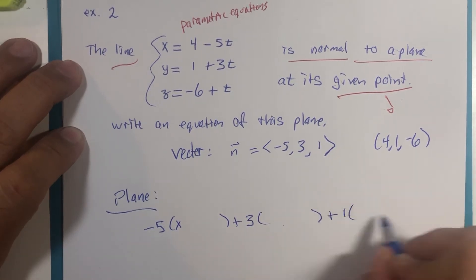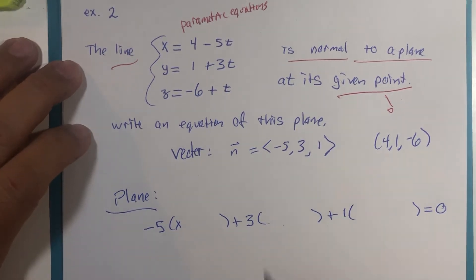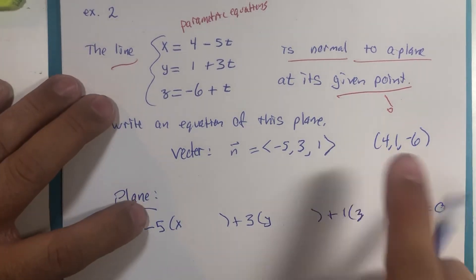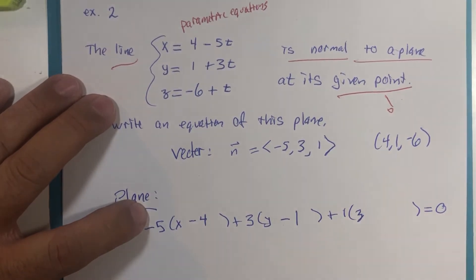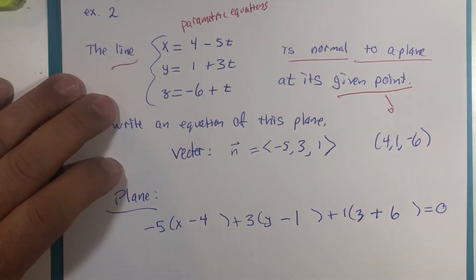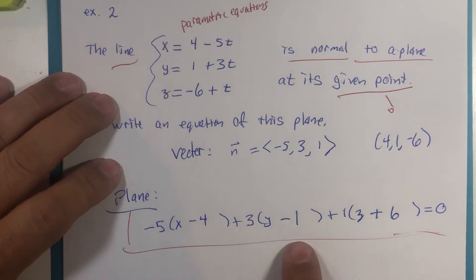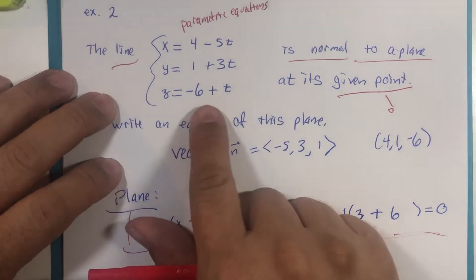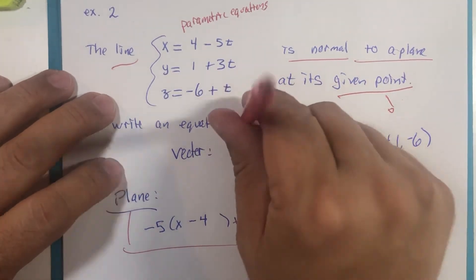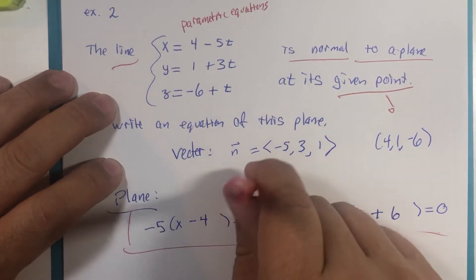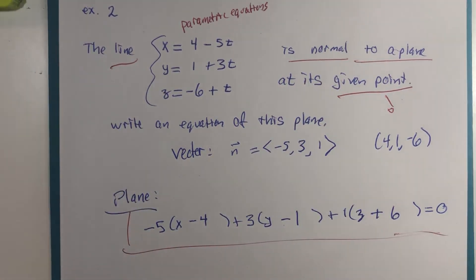The normal vector components are -5, 3, and 1 — I'll write the 1 to remind everyone it's there. The X-coordinate was 4, so we write (X minus 4); Y-coordinate is 1, so (Y minus 1); Z-coordinate is negative 6, so (Z minus negative 6) is (Z plus 6), equal to zero. This plane is defined by its normal vector and a starting point, and the line is the actual line that comes out of that plane — that's a really critical distinction to be able to make.